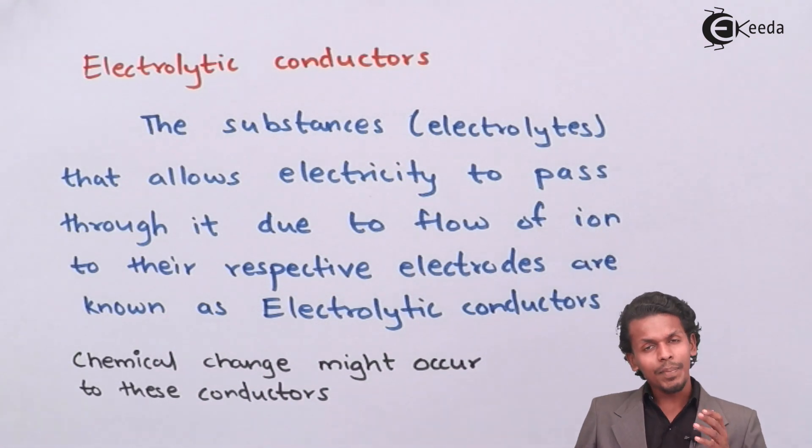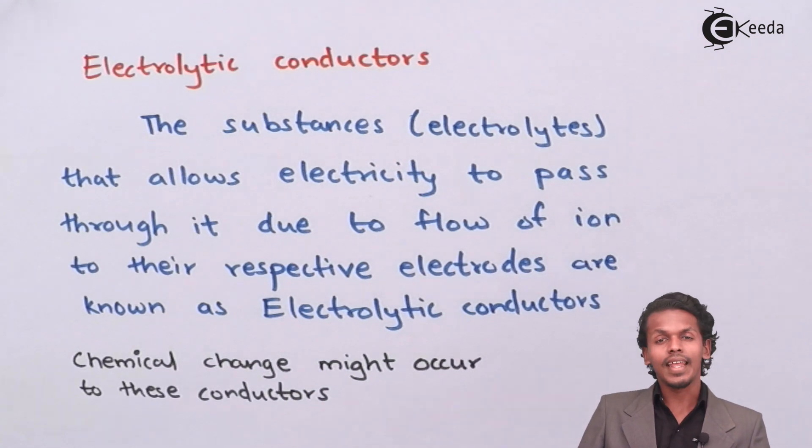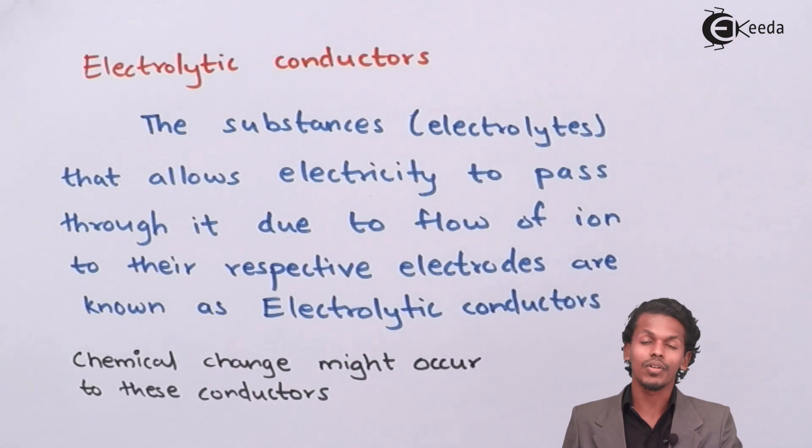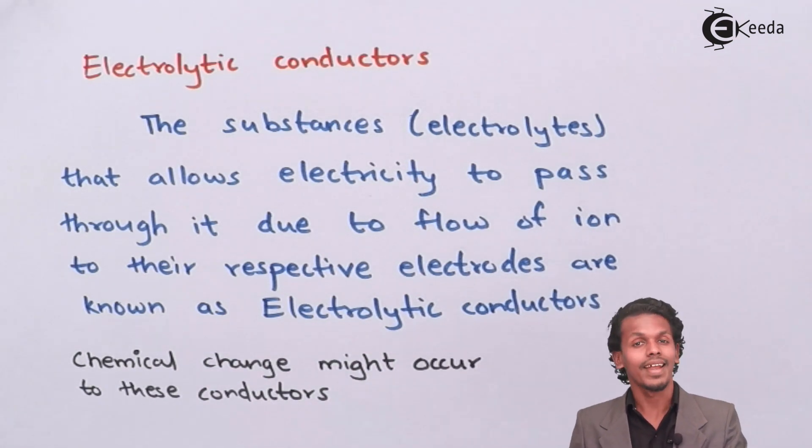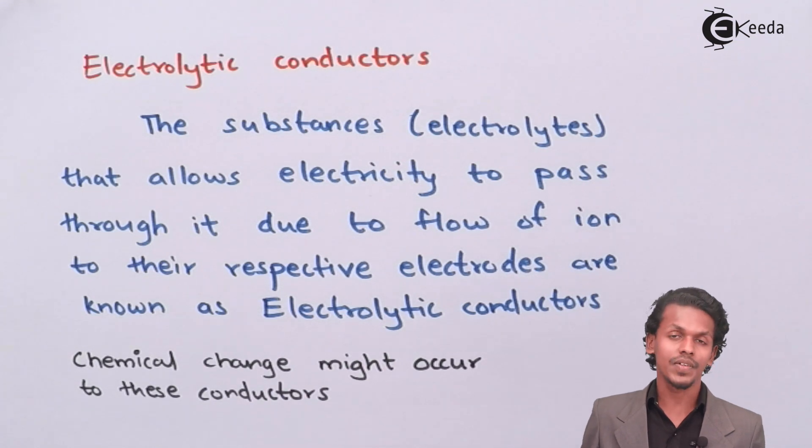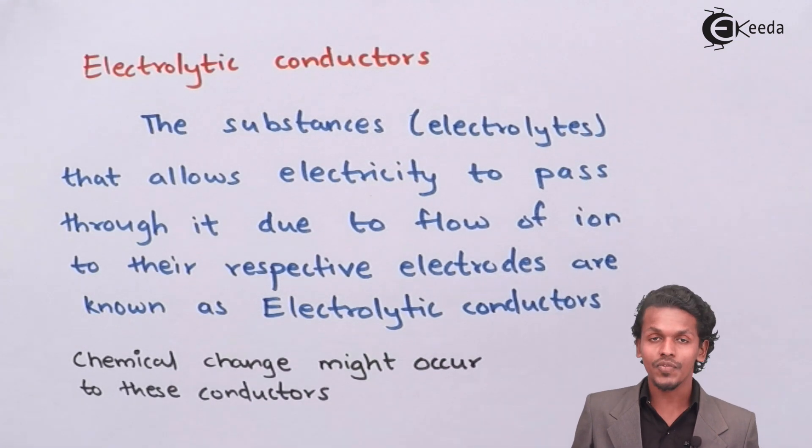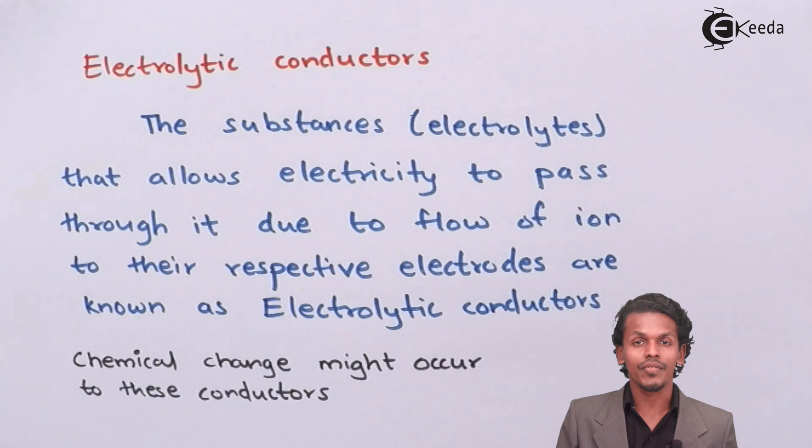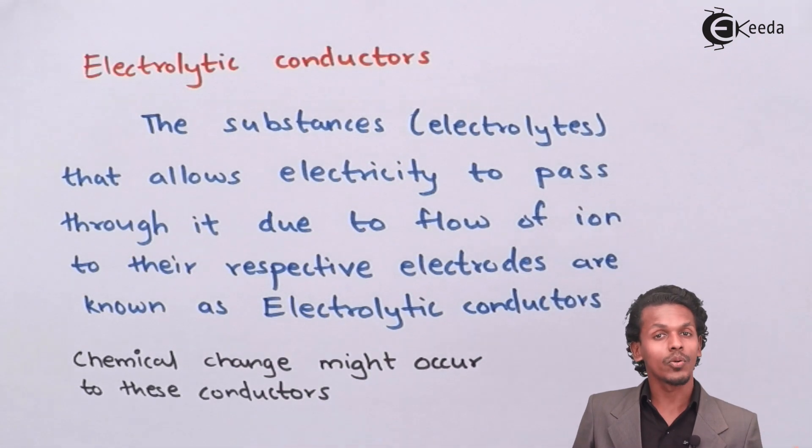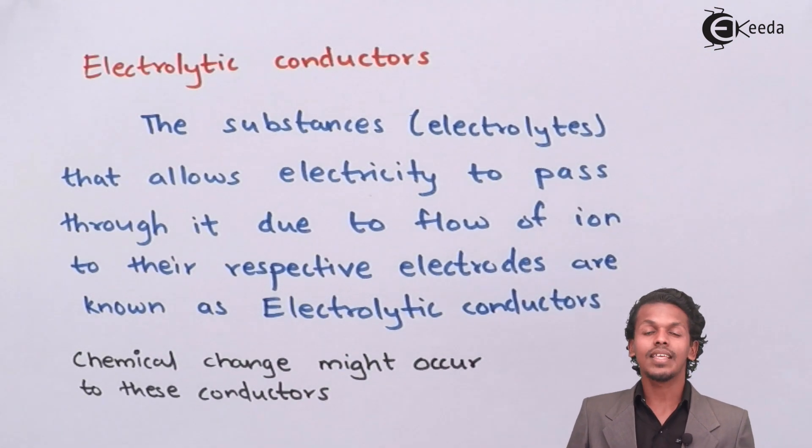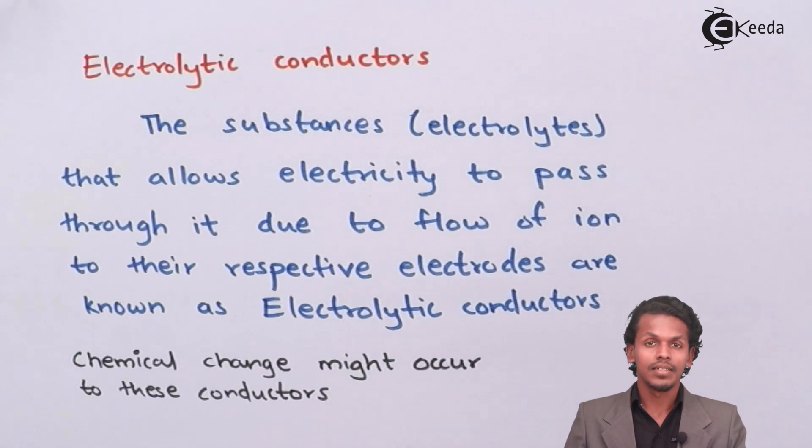But when we pass current through it, this cation and anion can undergo redox reaction or oxidation and reduction, and hence the chemical change can be observed. The one which is present in aqueous form can now be converted into a metallic form or an elemental form. So this is the property of the electrolytic conductors.